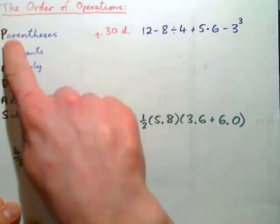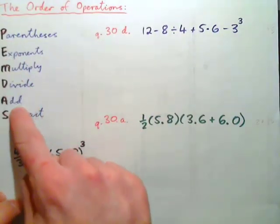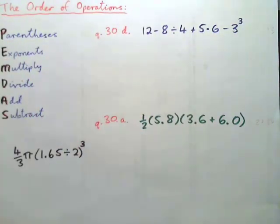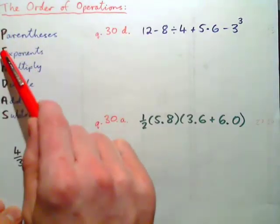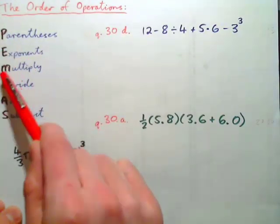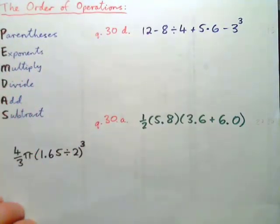PEMDAS stands for parentheses, exponents, multiply, divide, add, subtract. So we start with parentheses first, then exponents, then we multiply, divide, add, and then subtract. Well, actually it's a little more complicated than that, and I will show you why.